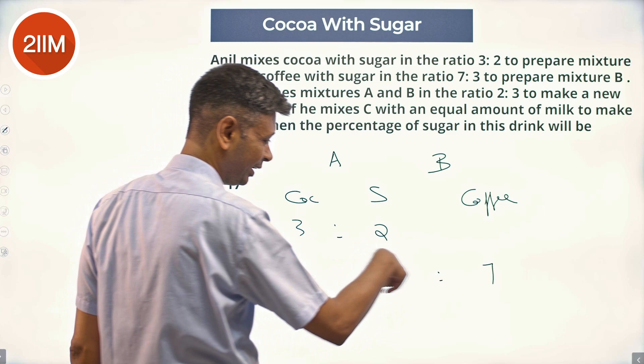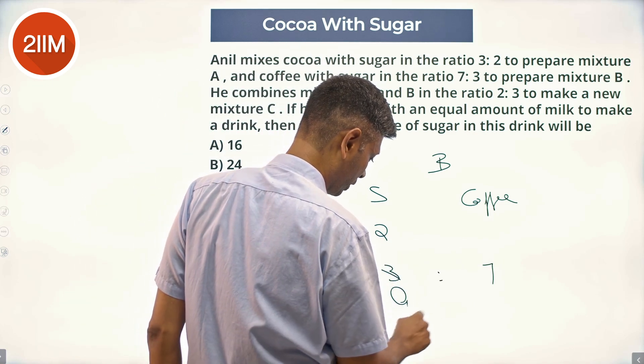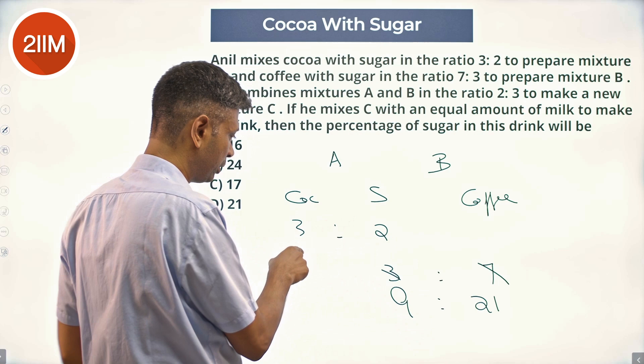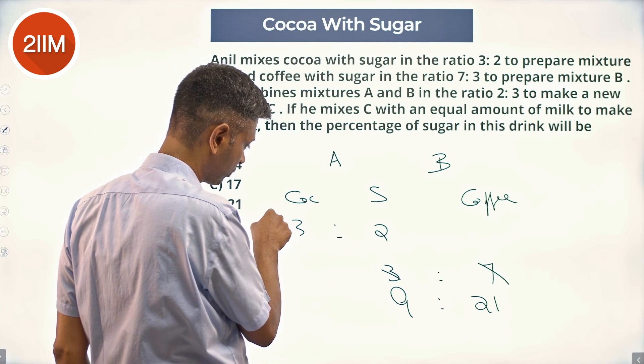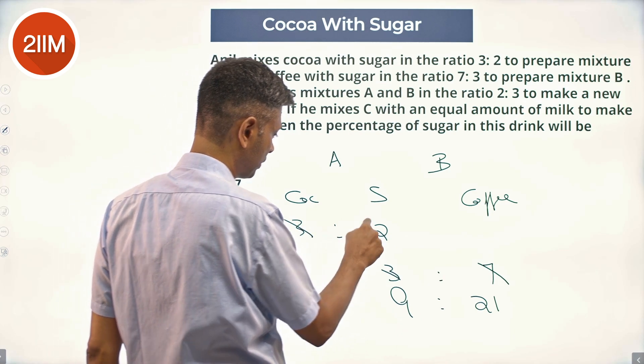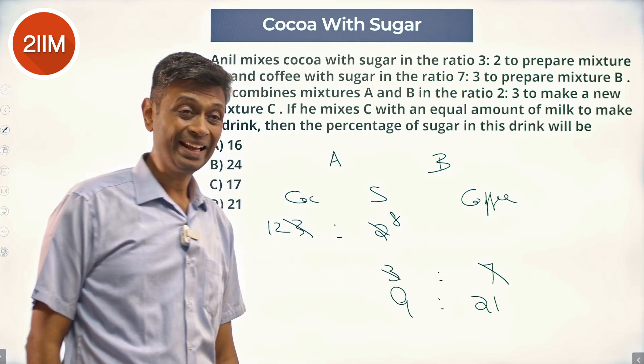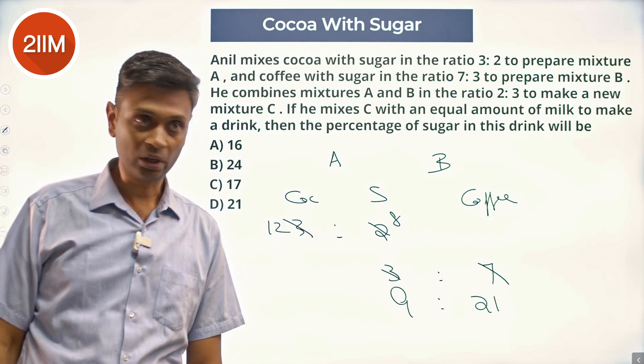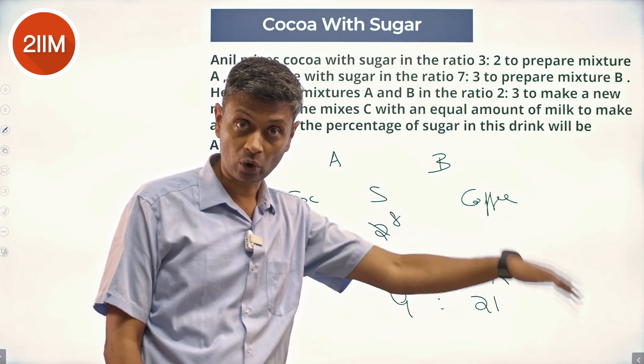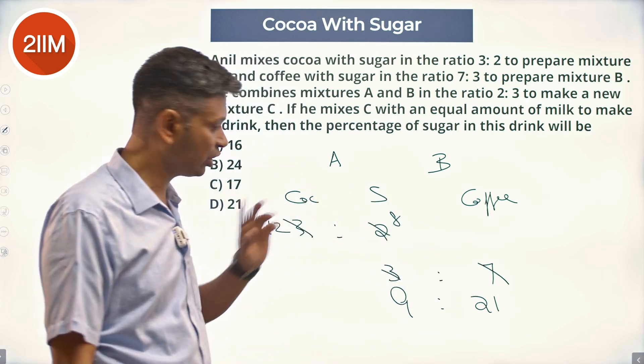What will that make it? I'm taking 3:9 as 9:21. I want this to be 20, I'll make this 4 into 4, 12:8. I get 12 and 8 of coffee and sugar, I mean cocoa and sugar. 9 and 21 of sugar and coffee. This is 3:7, that is 3:2.